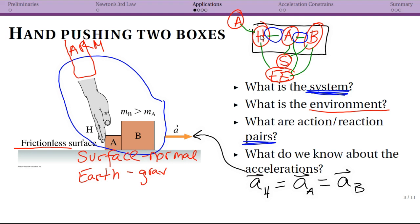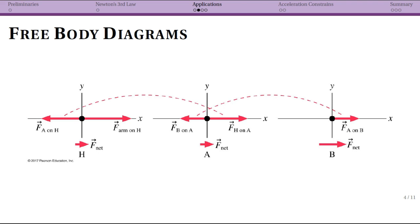So far, just the initial analysis using the interaction diagram — this is really important. Depending on the question asked, for instance 'how hard is the hand pushing on block A,' you would definitely want the hand as part of your system. Anything you're analyzing should be part of the system. The next step is drawing free body diagrams. We'll draw three — one for each object — and they should all share the same coordinate system.